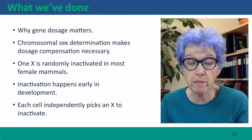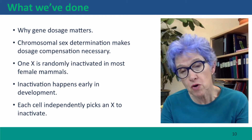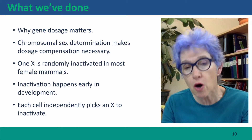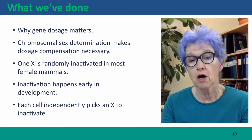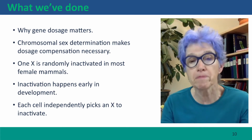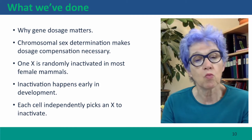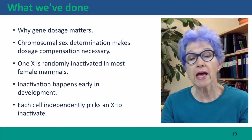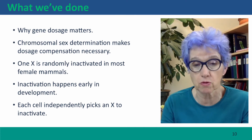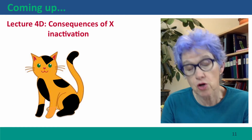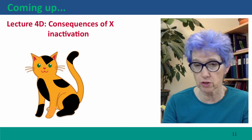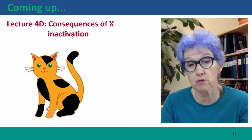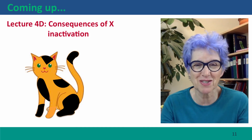So we've talked about why gene dosage matters and how chromosome sex determination makes it necessary to have a mechanism to compensate for the different dosages of X chromosomes in males and females. In mammals, the mechanism is X inactivation — one X chromosome is turned off, it happens early in development, and each cell independently picks an X chromosome to inactivate. In the next lecture, we'll talk about the consequences of this independent turning off of different X chromosomes in different cells, using the calico cat as our illustration. Hope to see you there.